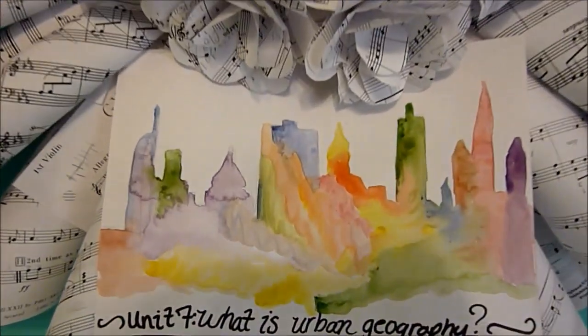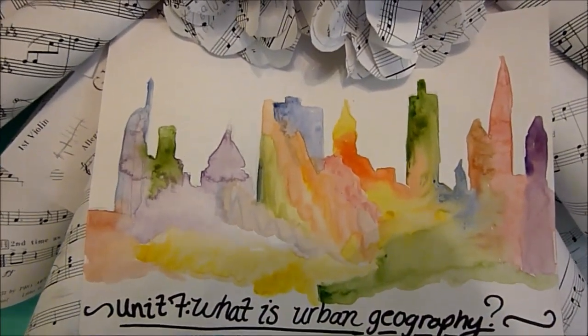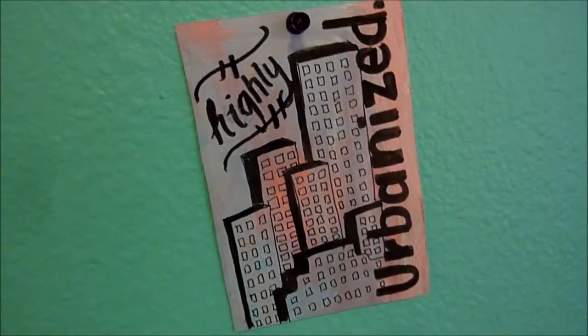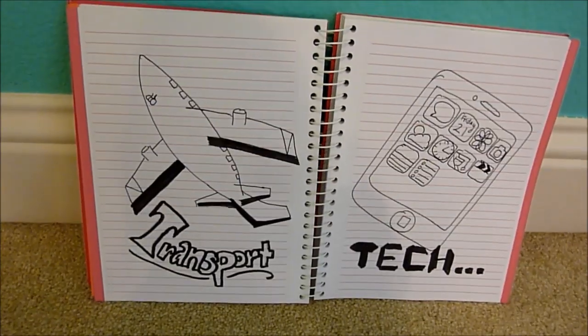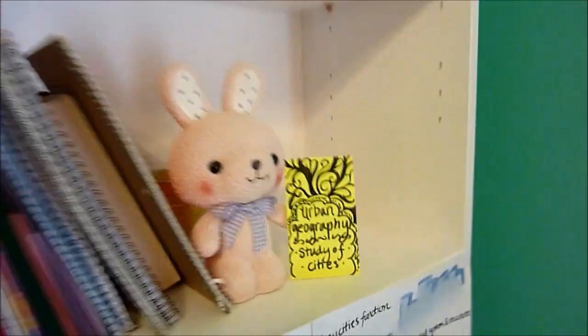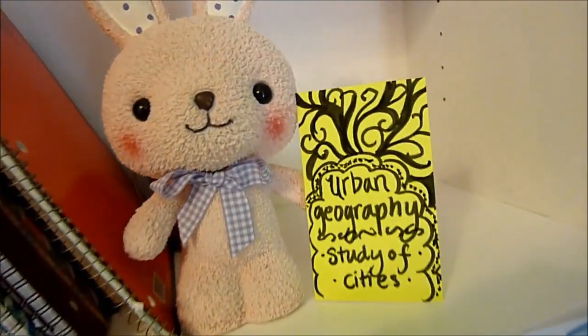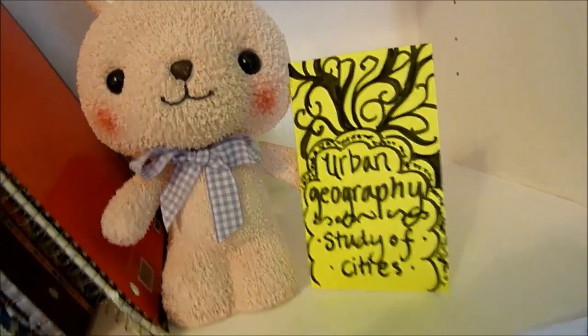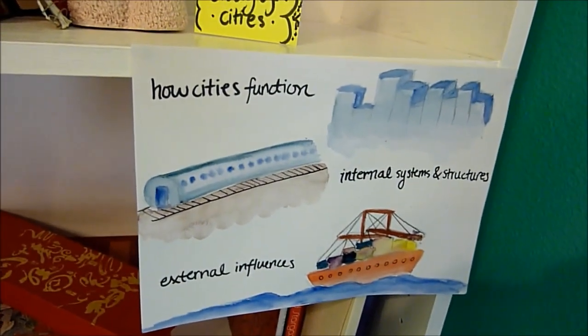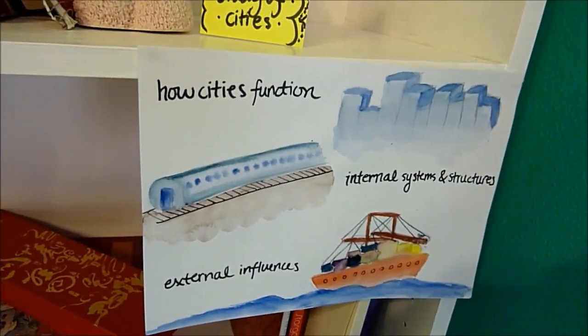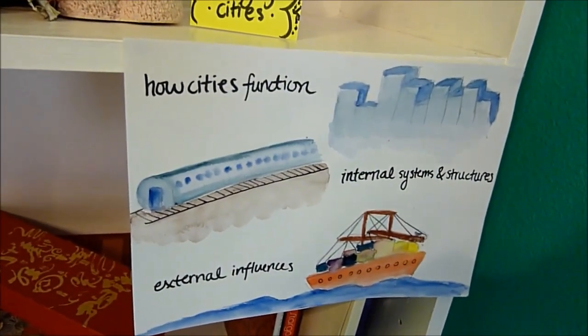What is urban geography? Today, we live in a highly urbanized world where every city is very complex and connected to other cities through transportation and technology. Urban geography is the study of these cities, and it focuses on how cities function, their internal systems and structures, and the external influences on them.